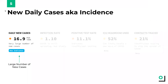As with our other four metrics — infection growth rate, test positivity rate, ICU capacity, and contact tracing — we identify four threat levels for incidence: critical, high, medium, and low. And we consider these values in determining the overall risk level for your community.